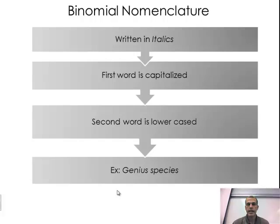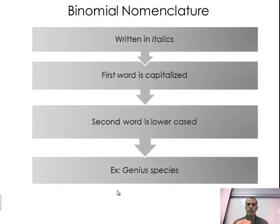For the proper way of writing binomial nomenclature: it's always written in italics, so if you're typing it, you'll italicize it. The first word is capitalized, the second word is always lowercase. The genus and species are the two lowest or most specific levels on the classification system, so your genus is always capitalized and your species is always written in lowercase. Take a second to copy this down, and then we'll move on and show you a couple of examples of actually naming organisms.